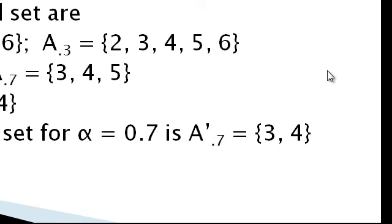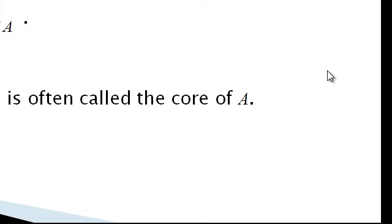The alpha cuts give a relation between fuzzy sets and crisp sets. For the strong alpha cut at alpha equals 0.7, the strong alpha cut of A equals {3, 4}.